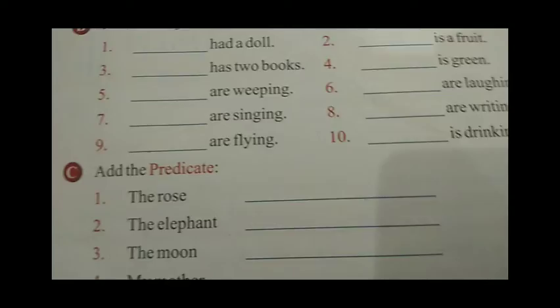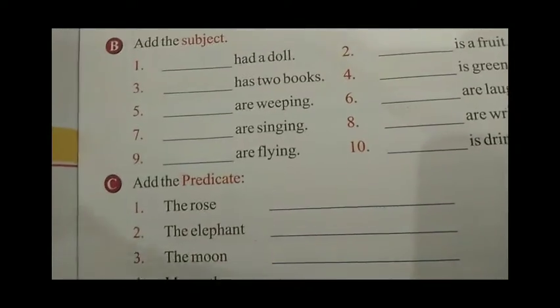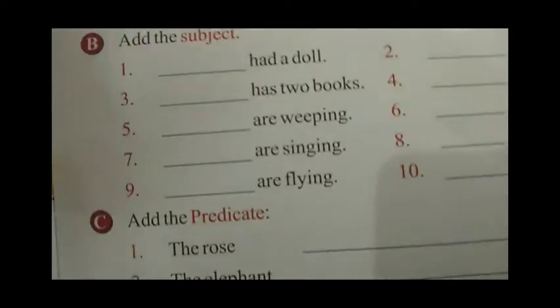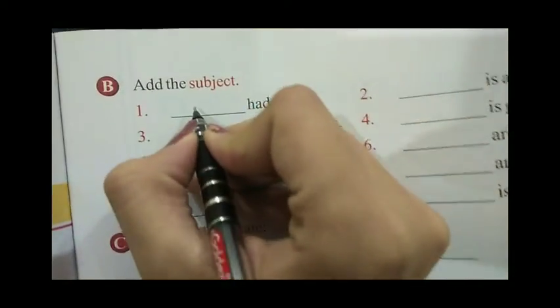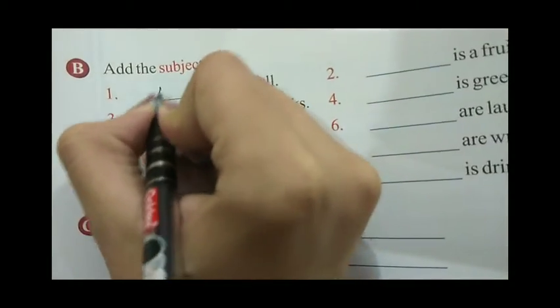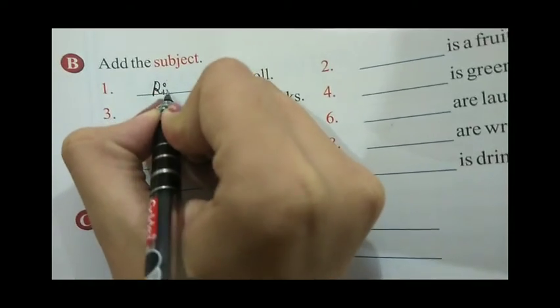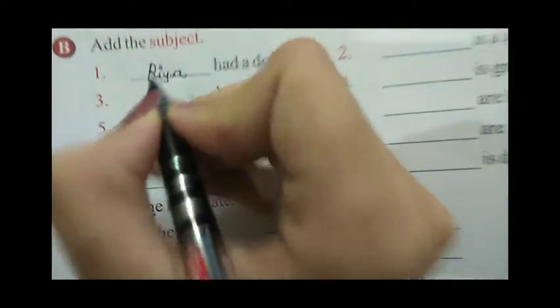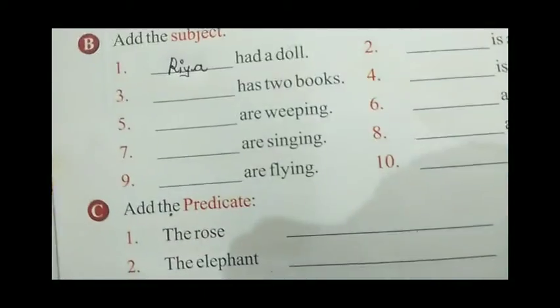The first one is: dash had a doll. So here we will add a subject — any name like Ria. Ria had a doll. So our subject will be Ria — R, I, Y, A — Ria.